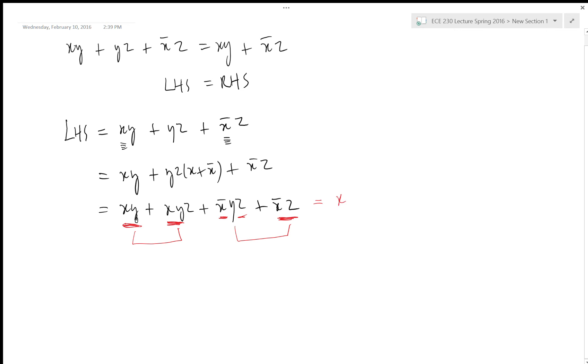If we factor out xy, so we have 1 plus all z and x naught z, so we have y there. So this is 1, this is 1, so we left with this which is equal to right hand side.